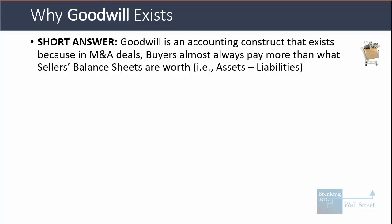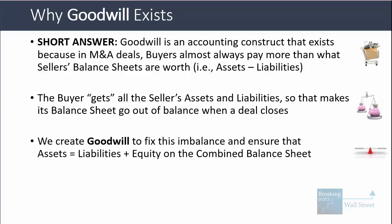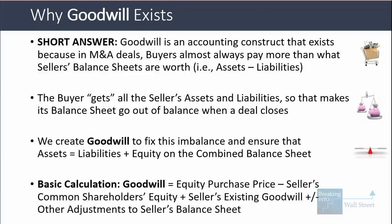If you look at roughly assets minus liabilities — that's the value of a seller's balance sheet — to acquire the seller's equity, a buyer is almost always going to pay more than that number. The buyer gets all the seller's assets and liabilities, so when it pays more than what the seller's balance sheet is worth, that makes its balance sheet go out of balance when a deal closes. We create goodwill to fix this imbalance and ensure that assets equals liabilities plus equity on the combined balance sheet.